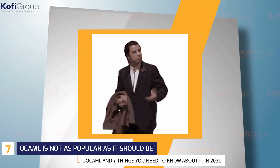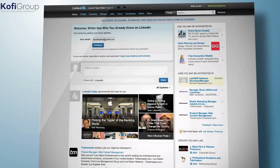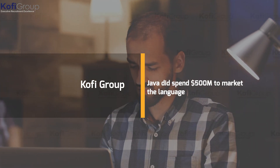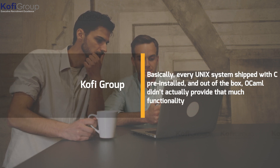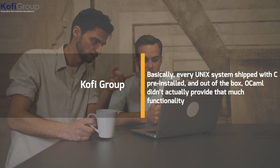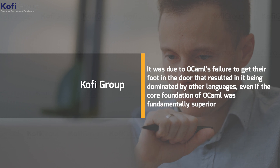7. OCaml is not as popular as it should be. Given everything you know about OCaml, you might be confused as to why you don't see recruiters asking for it on LinkedIn as much as you'd expect. The reason for OCaml's lack of popularity isn't necessarily a fault of the language itself. After all, Java did spend 500 million dollars to market the language. C had a massive head start on getting into the mainstream — every Unix system shipped with C pre-installed — and out of the box, OCaml didn't provide that much functionality. It was due to OCaml's failure to get its foot in the door that resulted in it being dominated by other languages, even if the core foundation of OCaml was fundamentally superior.